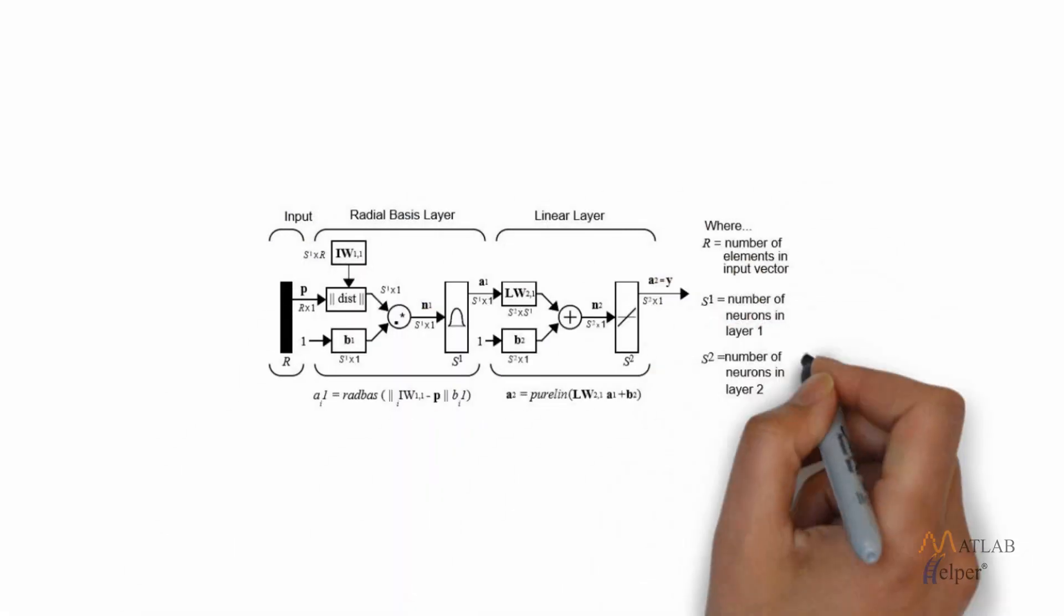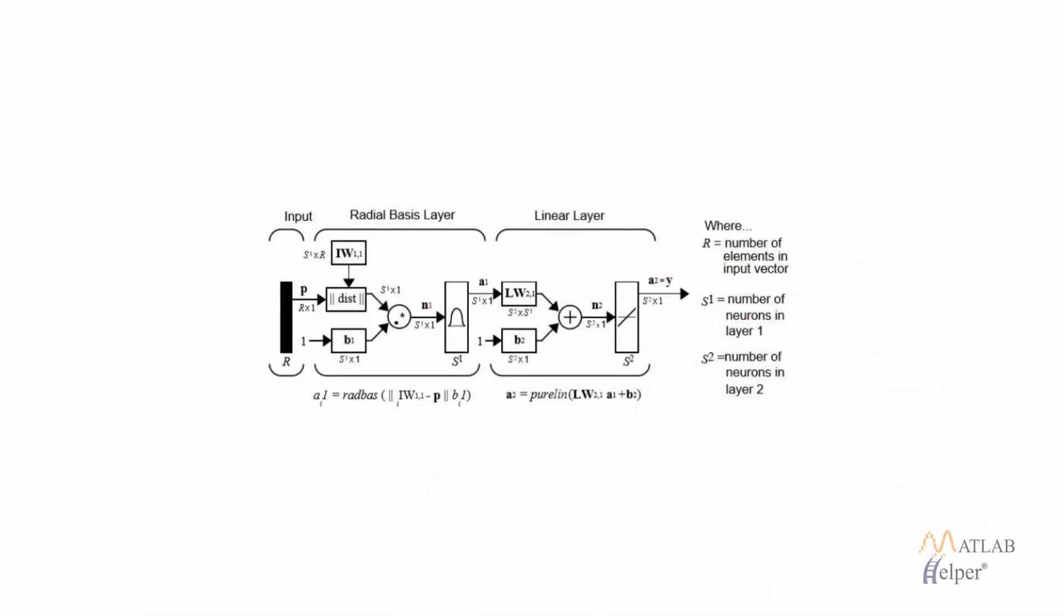Let's look at how this radial basis neural network works. This is how our radial basis network is created in MATLAB. First we supply the input, then we need to define the Gaussian neurons or the neurons of the hidden layer.